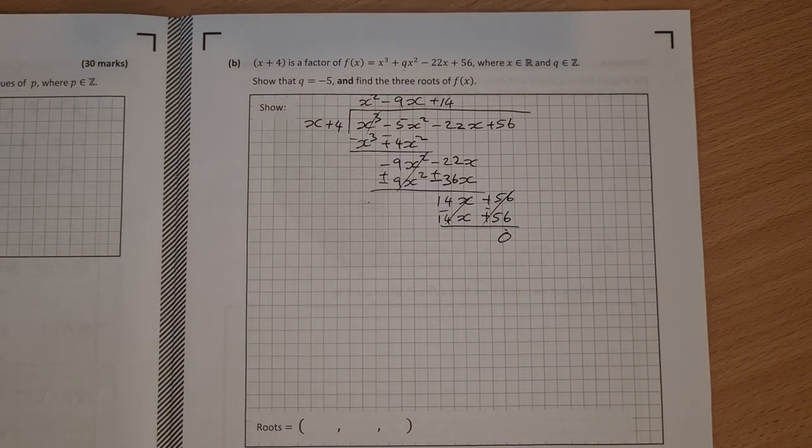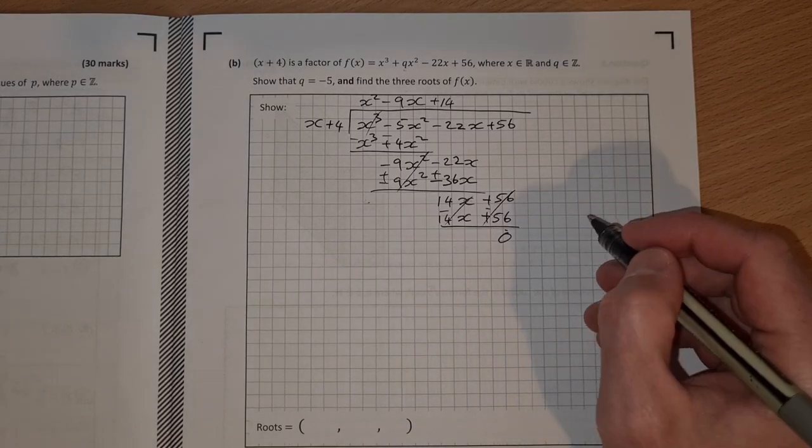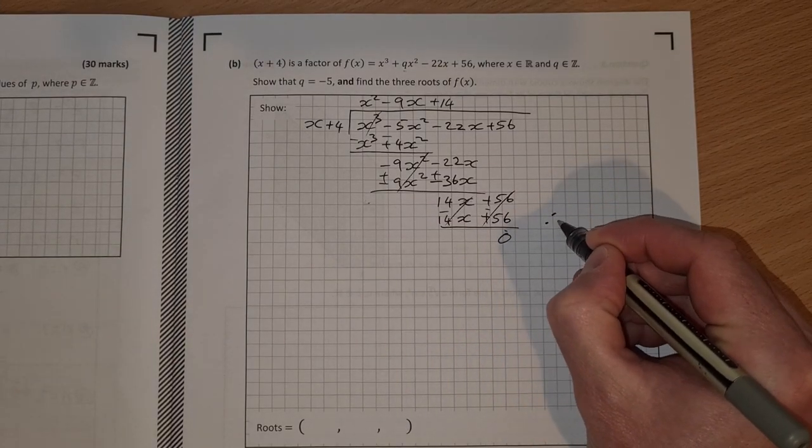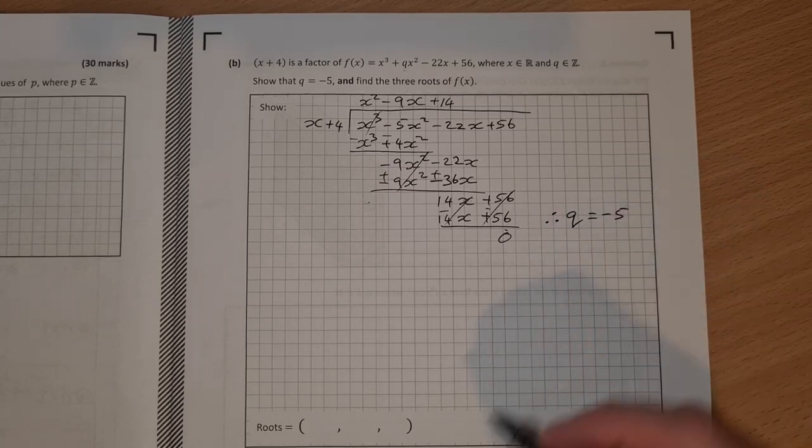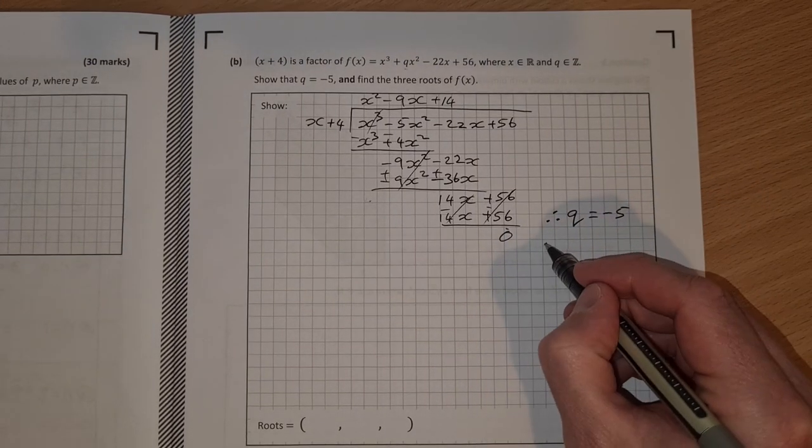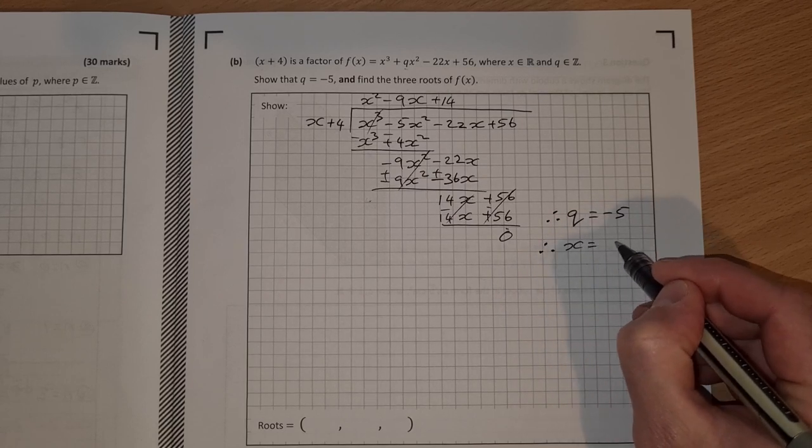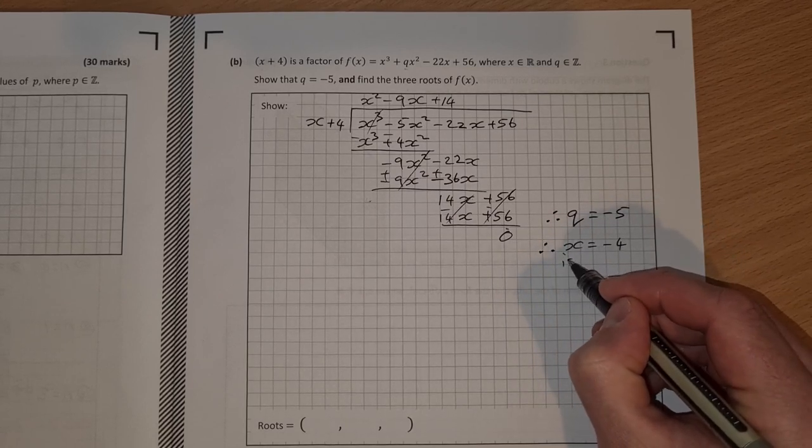So that means that q is equal to minus 5. So I'd say that at this point I'd say therefore q is equal to minus 5. And I'd also say therefore x equal to minus 4 is a root.